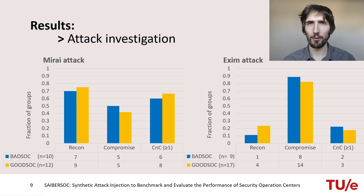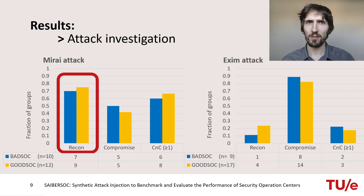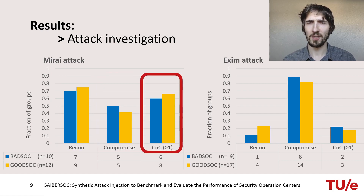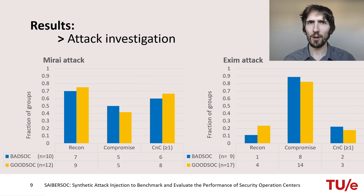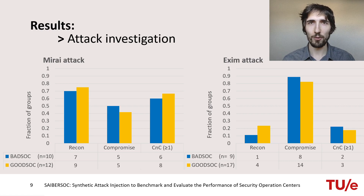Now let's continue to the attack investigation. For all reports that identified one of the two injected attacks, we also looked at the quality of the report — meaning the attack investigation. We have two charts, one for each attack. We further divided the analysis into the three attack phases: the reconnaissance phase, the compromise phase, and the post-compromise command and control activities. For neither of the two attacks were we able to observe any significant differences in operational SOC performance between good SOC and bad SOC, which is not surprising, because the configurations were completely identical except for the disabled alerts — making it easier to identify an attack in good SOC, but not to investigate it.